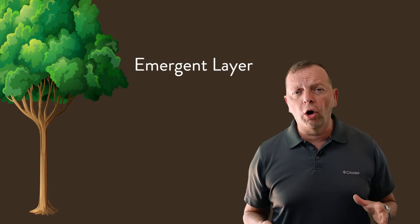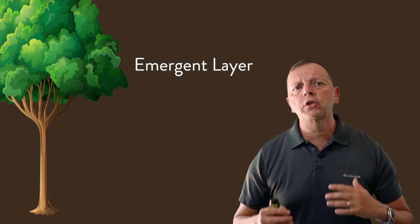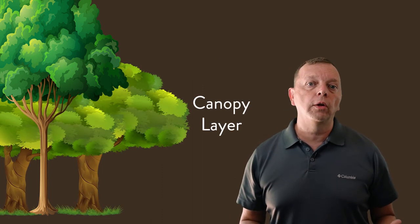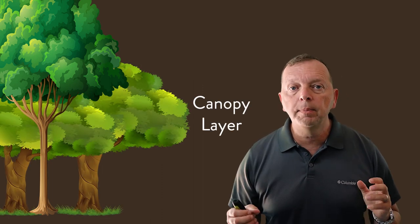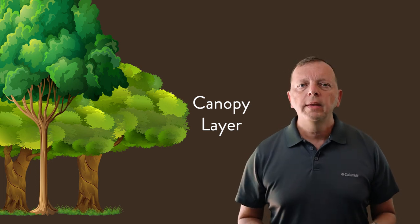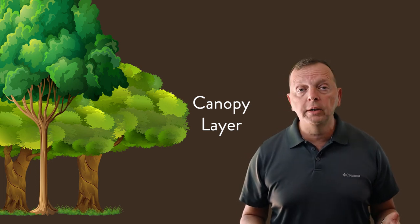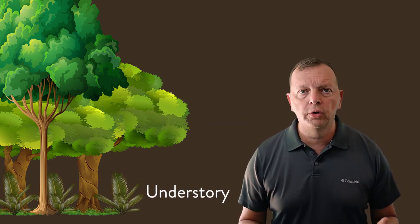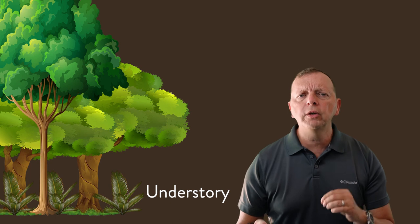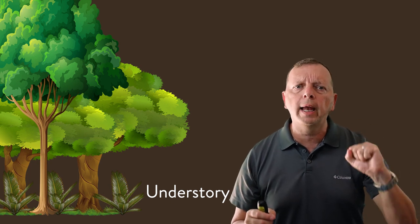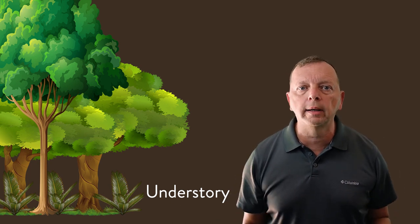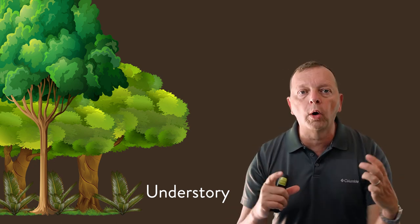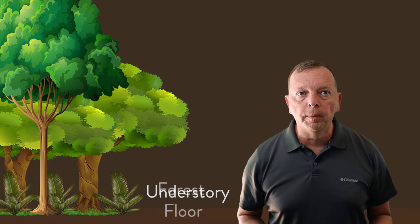Below the emergent layer is the canopy layer, the primary layer of the forest, which also receives a great deal of sunlight not blocked by the emergent layer. Below the canopy layer is the understory layer. By this point, the two upper layers have blocked most of the sunlight, so trees in the understory tend to have much larger leaves to absorb what little sunlight is available.